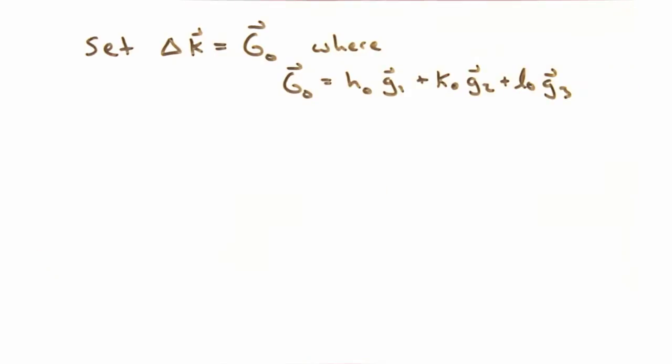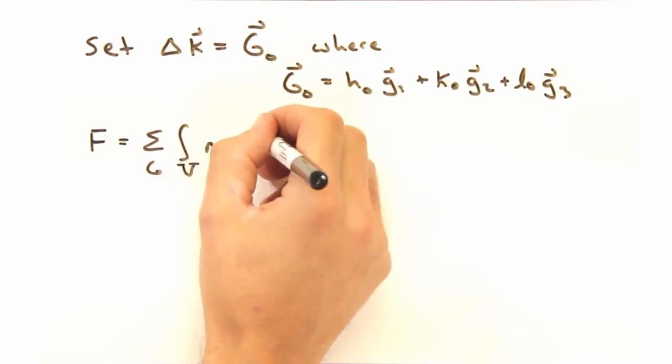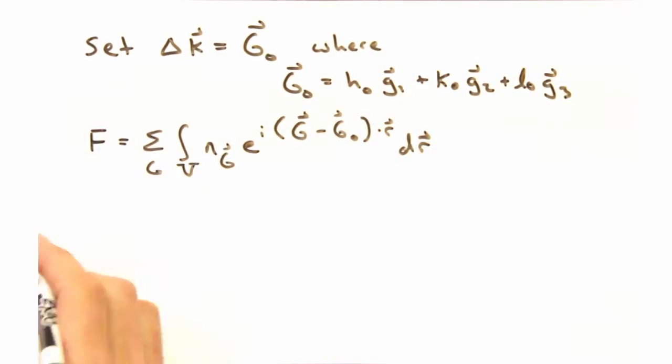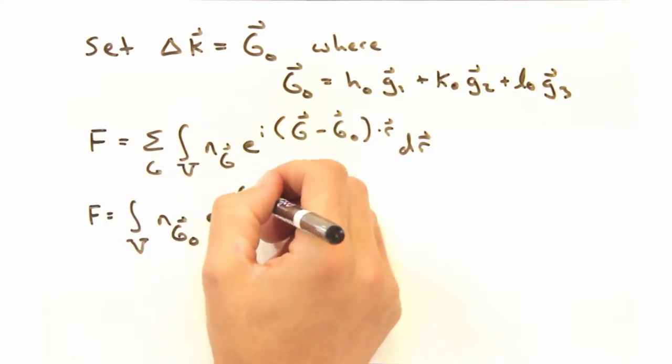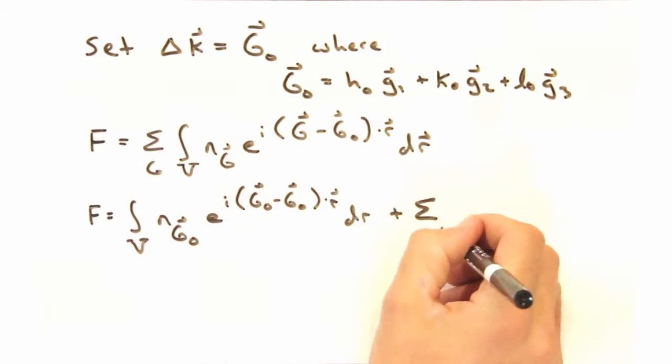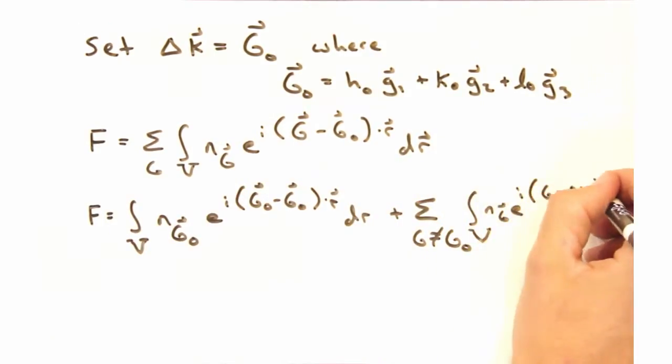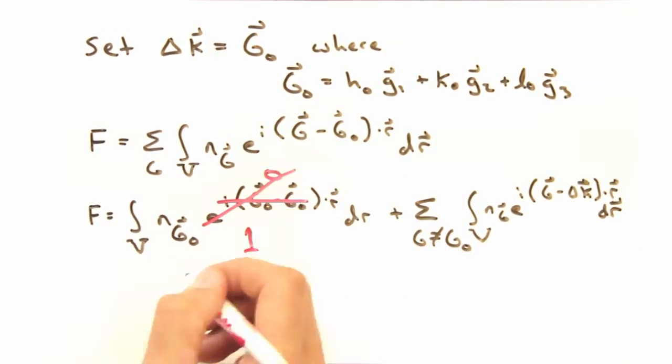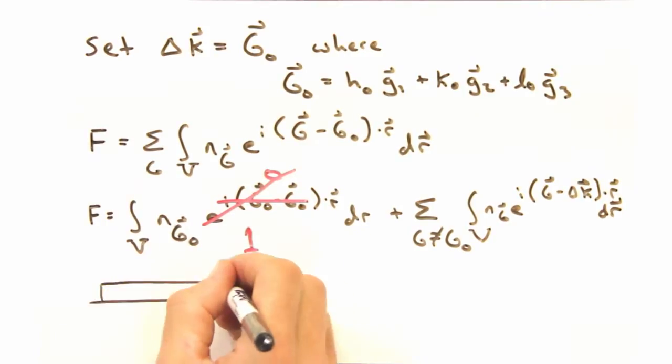Okay, how about something easy to start? So what happens when we set delta K equal to some G-naught value with a particular H, K, and L? As we do the summation, we're going to eventually run into a term where G equals G-naught. Since delta K equals G-naught, the exponent goes to one, and the integral becomes fairly trivial. Visually, I like to think about that integral like this.